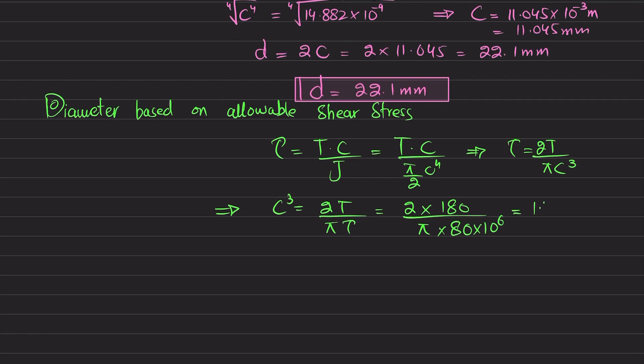When you calculate it, you get 1.432 times 10 to the minus 6 cubic meters. If you take the cubic root on both sides using a scientific calculator, you will get the value of c equals 11.273 times 10 to the minus 3 meters, or 11.273 millimeters.